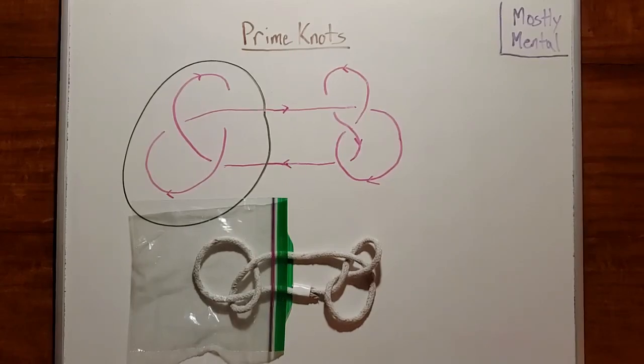So to check if a knot is prime, we can look at every pair of strands and see if we can draw a ball around everything to one side. If we can, the knot is composite, and if we can't, the knot is prime.